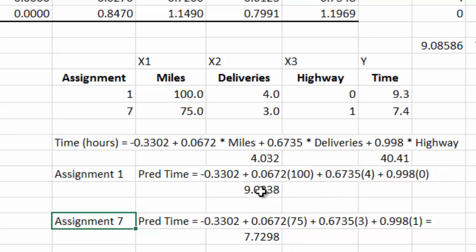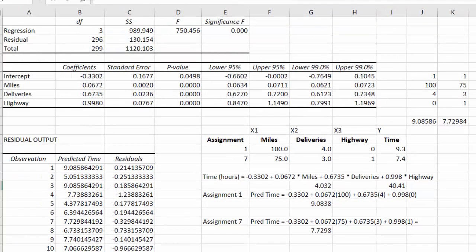And we could see that the predicted y value here is pretty close to the actual data, 9.3. And here as well, 7.73 is pretty close to 7.4.